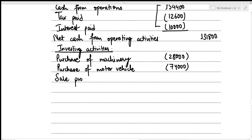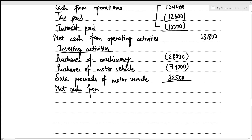Net cash from investing activities equals minus 28,000 minus 74,000 plus 32,500, which gives negative 69,500.